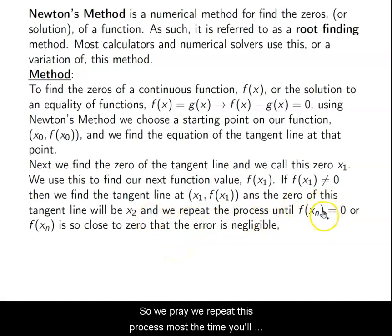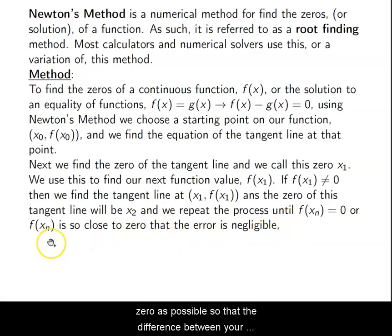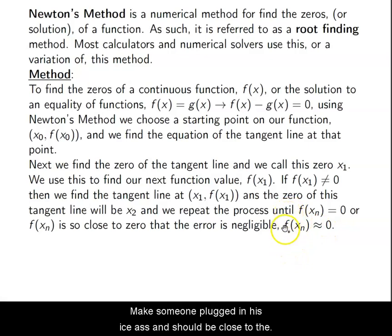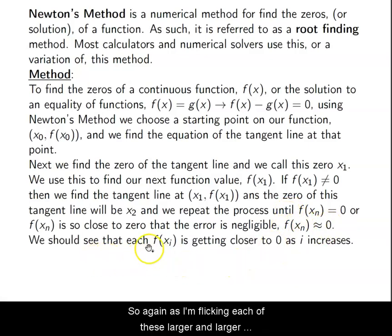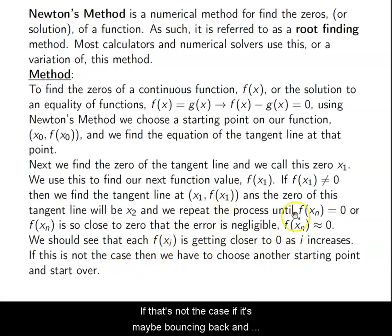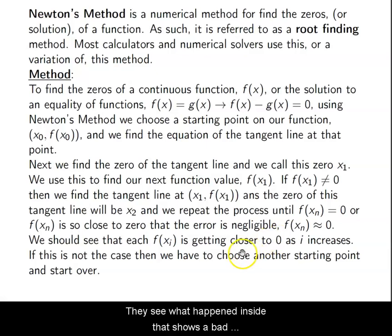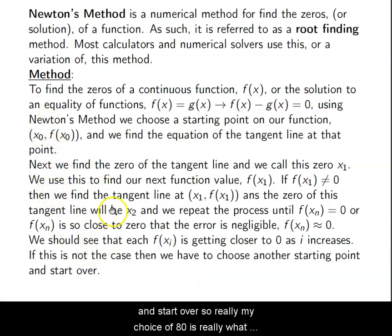We repeat this process. Most of the time, you'll never actually get to zero. The goal is to get as close to zero as possible so that the difference between your value and zero is almost nothing. When we plug in this value to f, it should be close to zero. If it's bouncing back and forth and not getting closer to zero, or if I'm getting farther away from zero with each successive value, then I chose a bad starting point and I'd have to choose a new x0 and start over.